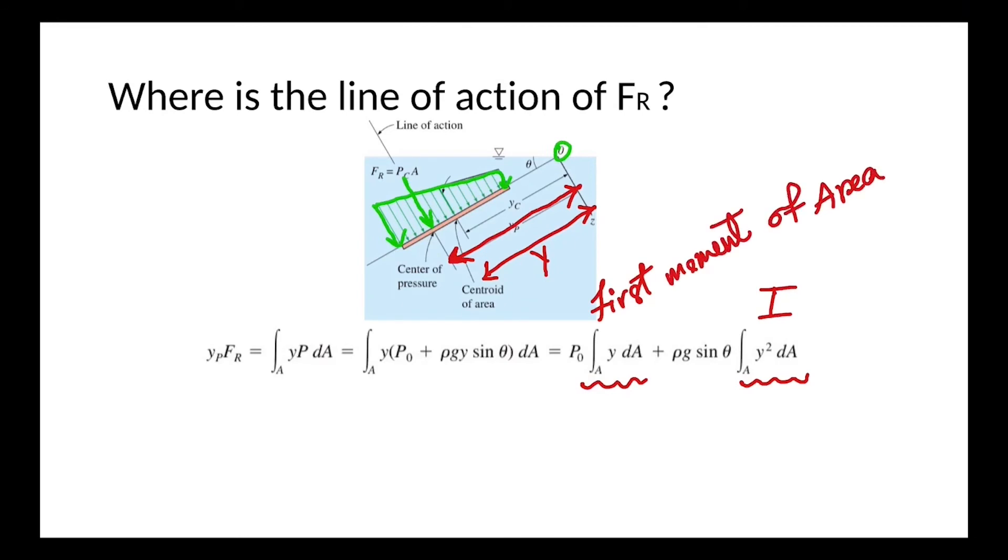If we simplify this equation again, we will come to this one. But this is not the end. If we use the parallel axis theorem, which is known as this, we can rewrite the second moment of area about point C, which is the center of our object, instead of point O.